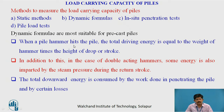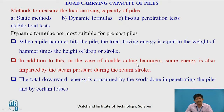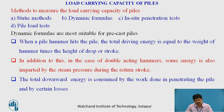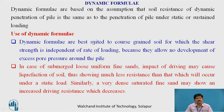When a pile hammer hits a pile, the total driving energy equals the weight of the hammer multiplied by the height of drop or stroke. For a double-acting hammer, additional energy is also imparted by steam pressure during the return stroke. The total downward energy is consumed by the work done in penetrating the pile and by certain losses. Dynamic formulas assume that the soil resistance to dynamic penetration equals that under static or sustained loading.